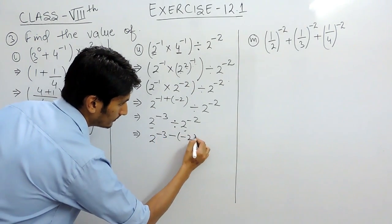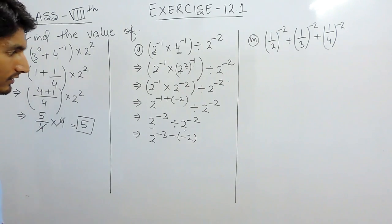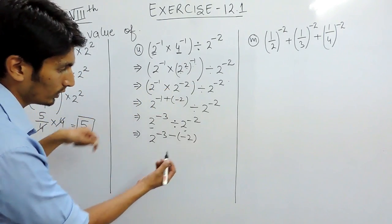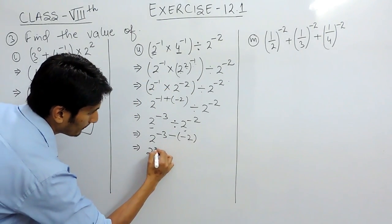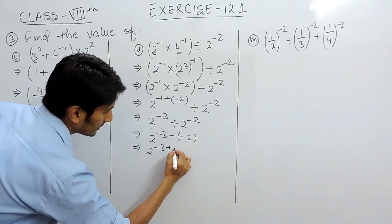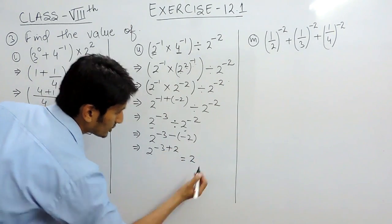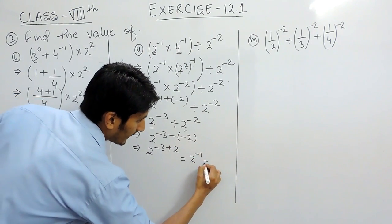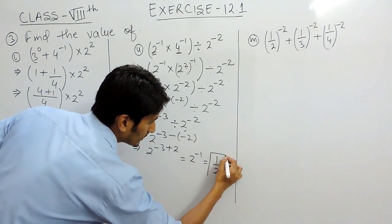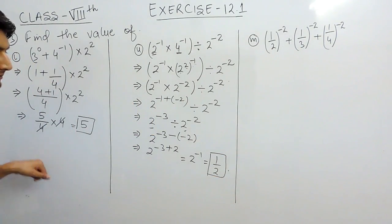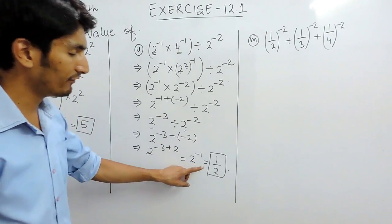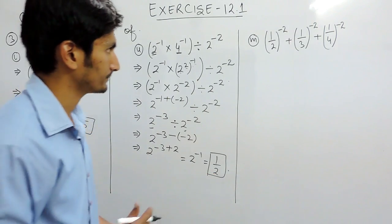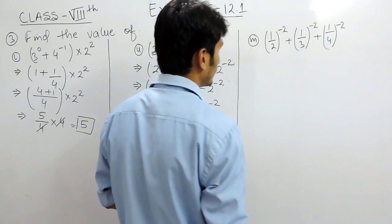We subtract: minus 3 minus (minus 2), which gives 2 raised to power minus 1. This can be written as 1 by 2. We know that whenever the power is negative, we shift the term to the denominator to convert it to positive. So the answer for the second part is 1/2.